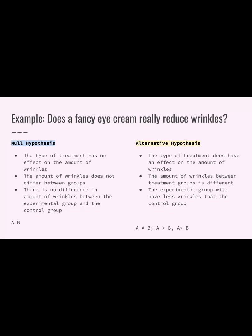For example, let's say you were watching an advertisement for a fancy eye cream to reduce wrinkles and you're wondering if it really works. Your null hypothesis would be that the type of treatment has no effect on the amount of wrinkles — whether someone uses that fancy eye cream or not will have no impact. Whereas with the alternative hypothesis, the type of treatment does have an effect on the amount of wrinkles, so the two groups are not going to be equal.